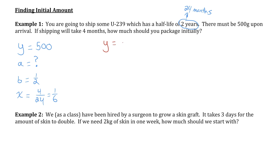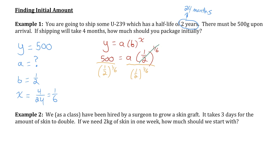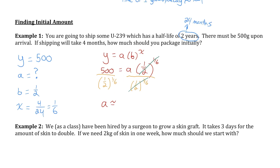Let me write the relationship: y equals a times b to the x, and sub in what we know. We want y to be 500, we don't know a, b is one-half, and the exponent is 1 over 6. To isolate 'a', divide both sides by one-half to the exponent of 1 over 6. That power of one-half cancels out on the right, and using a calculator I get about 561.23 grams of uranium — that's how much must be packaged so that in four months there will be 500 grams remaining.